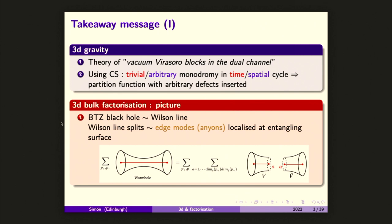So our model is not going to be a CFT — it's not even modular invariant, but it will capture these features. From the bulk factorization perspective, the claim — already alluded to by Matt Headrick and Verlinde in some paper a few years ago — is that you should be thinking about the BTZ black hole as a Wilson line. There is no really geometry attached to it. You should think about it in terms of a quantum state as a Wilson line.